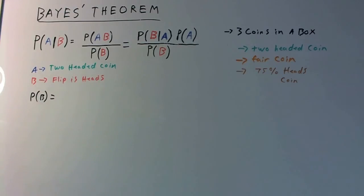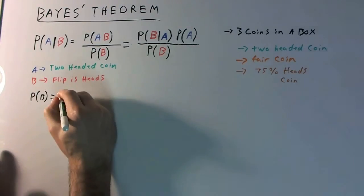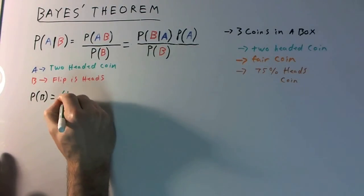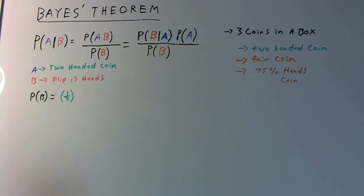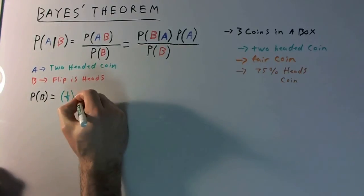If we consider the two-headed coin: I have three coins, so the probability of picking the two-headed coin out of those three is just one-third. I have to first pick the coin, then flip it, and the flip has to be heads. For the two-headed coin, if I flip it, the probability that it comes up heads is obviously one. So that's one-third times one.